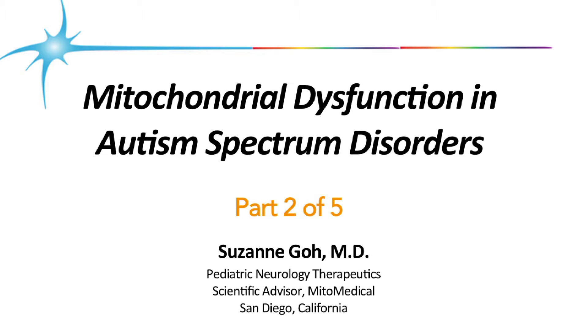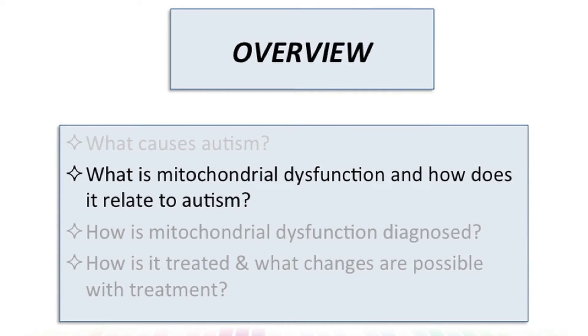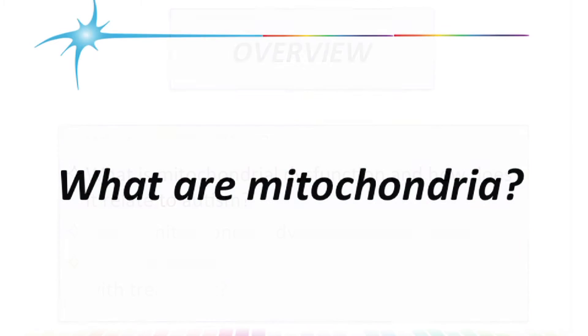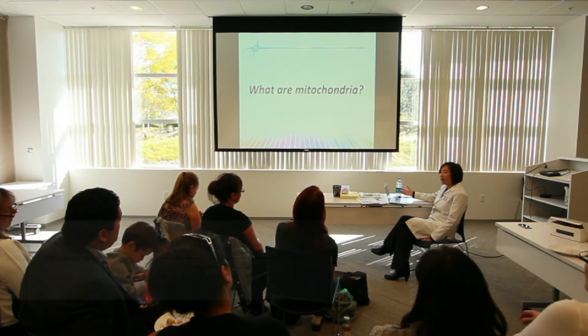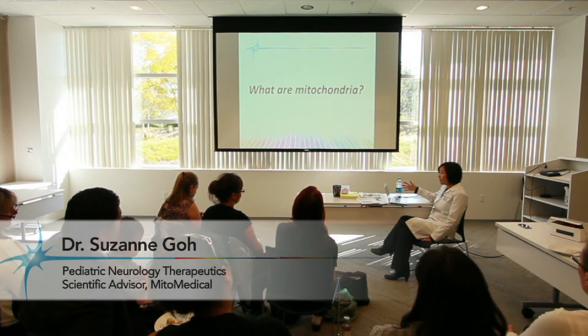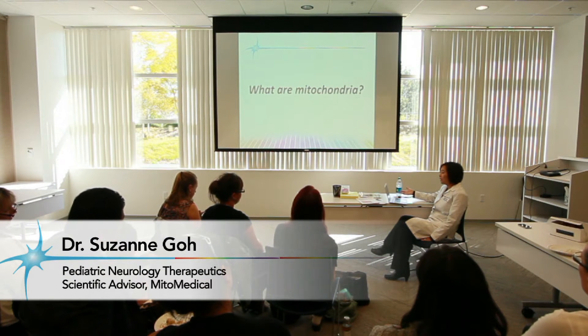Now let's look more in depth at what happens in mitochondrial dysfunction and its role in autism. We'll start by looking at mitochondria. Most people don't spend a lot of time thinking about mitochondria, and it's a very complex area of biology. It's hard to wrap your mind around, but it's important to have a basic understanding because it can really inform how you think about testing and treatment.